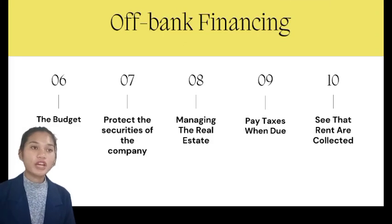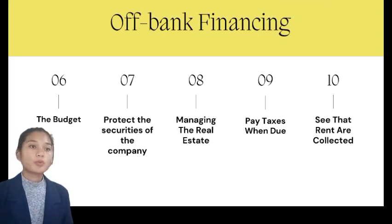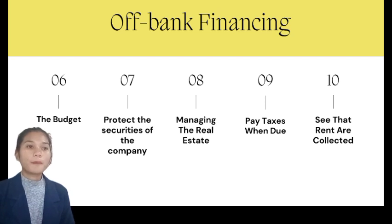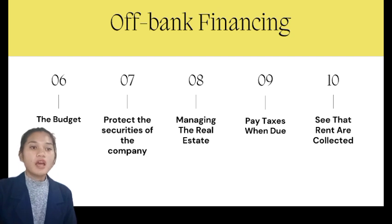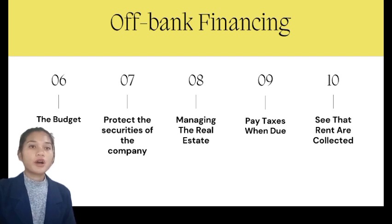The sixth is the budget. A well-managed company operates under a budget plan that includes a detailed assessment of the company's anticipated earnings and expenses. Some businesses create the budget in great detail so that each branch manager and department head is well aware of the portion of the revenue and expenses each is responsible for.